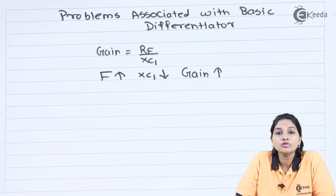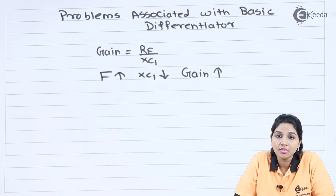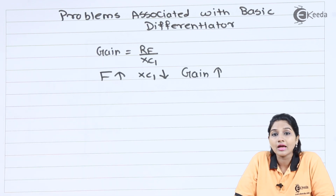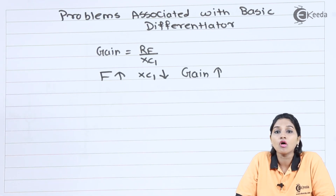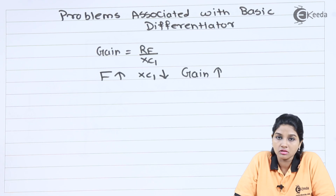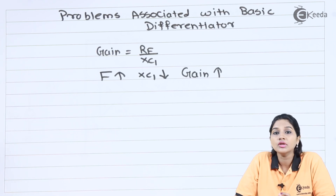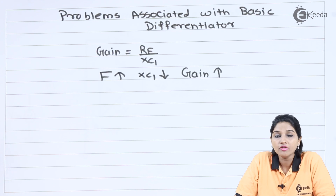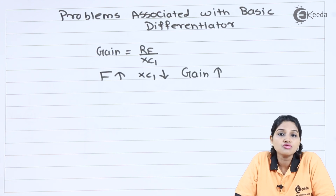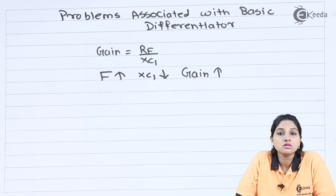Also, due to increase in the frequency, the high frequency noise also gets amplified by the circuit, and therefore high frequency noise also appears at the output along with the actual output signal. So due to this problem, we need to modify the circuit of the basic differentiator so that it can be used for many practical applications.